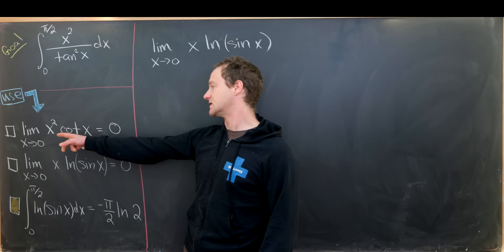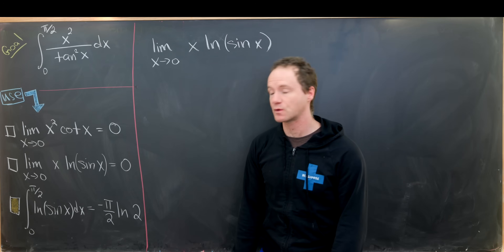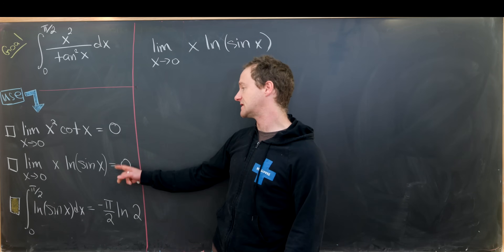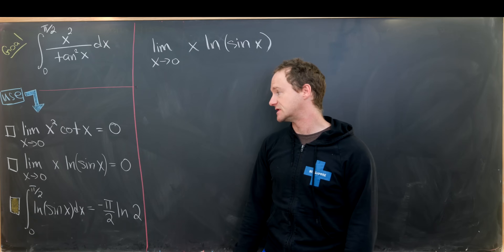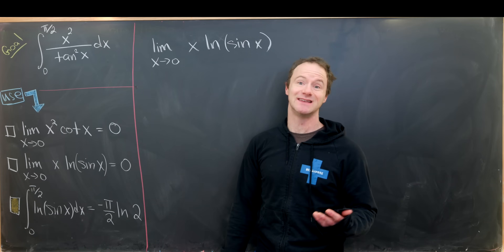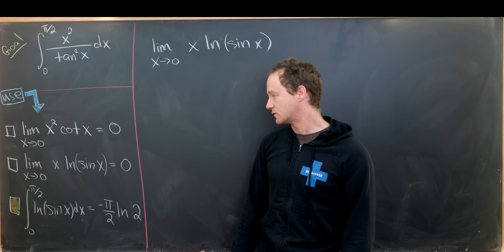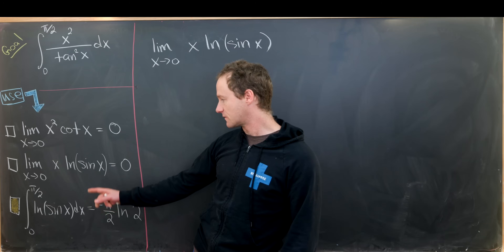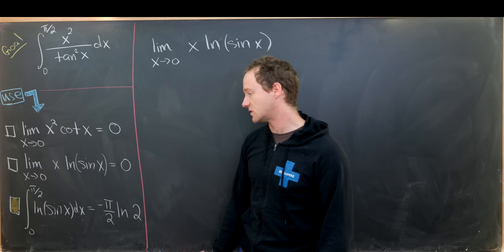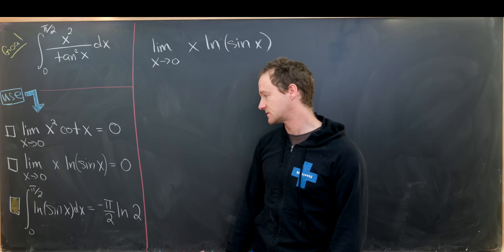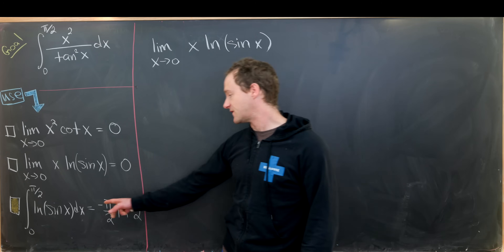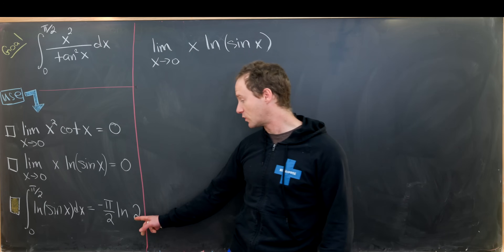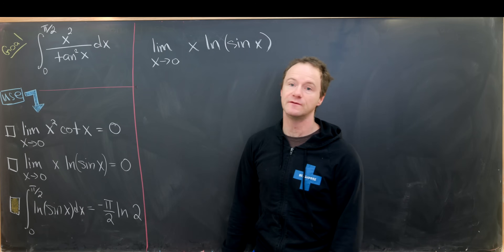The first tool is: the limit as x→0 of x²·cot(x) equals 0. The second is: the limit as x→0 of x·ln(sin x) equals 0. And finally, the integral from 0 to π/2 of ln(sin x) dx equals −(π/2)·ln(2). We will not prove this last one.